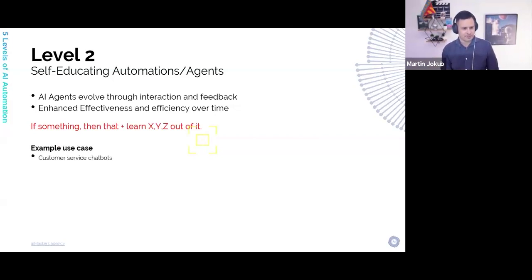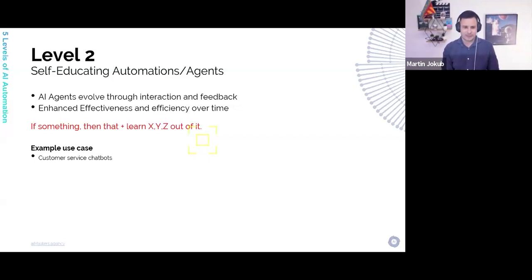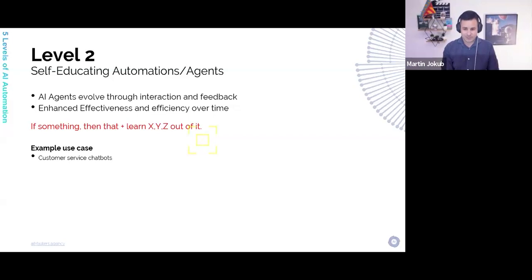Example use cases: customer service chatbots. When people talk with your chatbot, a human reviews how the chatbot interacted with people. If they see something was wrong or odd, they update the knowledge base or update the instructions, and your chatbot from that moment starts reacting much better, faster, and so on.